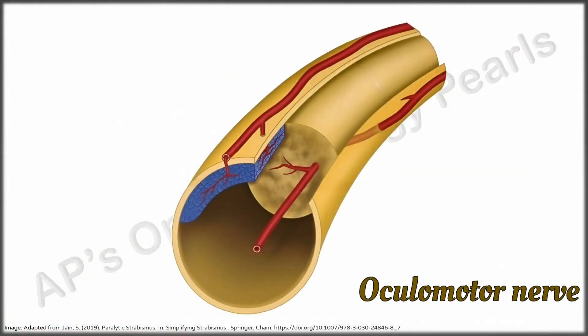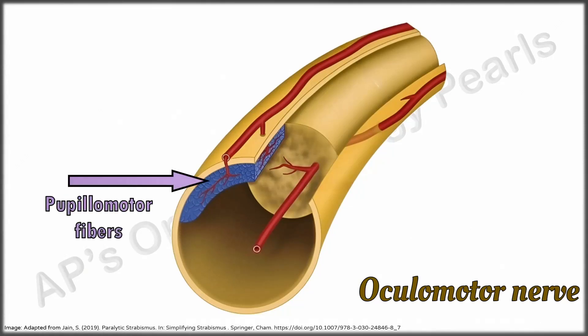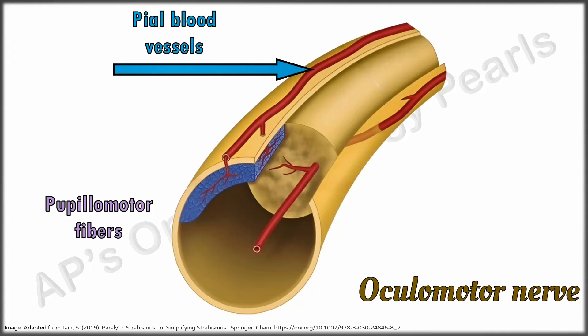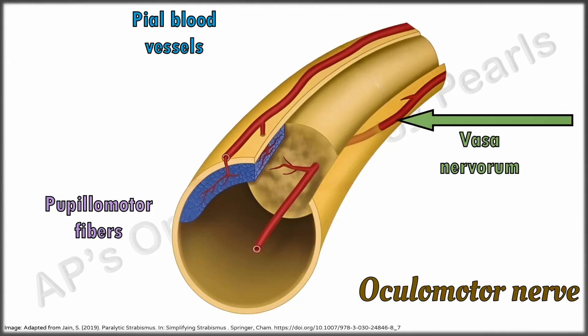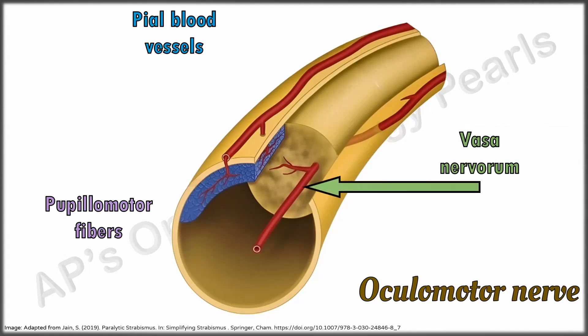This is a section of the oculomotor nerve between the brainstem and the cavernous sinus, where the pupillomotor fibers containing parasympathetic innervation to the sphincter pupillae are located superomedially and superficially. These pupillomotor fibers are supplied by the pial blood vessels, while the vasa nervorum — the small blood vessels supplying nerves — are located within the substance of the nerve.